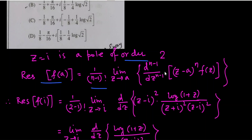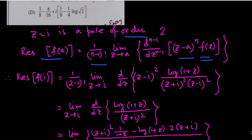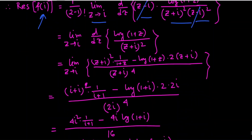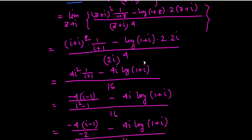The formula for the residue at a pole of order n at point a is: Res = (1/(n-1)!) · lim[z→a] d^(n-1)/dz^(n-1) [(z-a)^n · f(z)]. Since n = 2 and a = i, this becomes: lim[z→i] d/dz [(z-i)² · log(1+z) / (z+i)²(z-i)²] = lim[z→i] d/dz [log(1+z) / (z+i)²]. Taking the derivative gives [1/(1+z) · (z+i)² - log(1+z) · 2(z+i)] / (z+i)⁴, and substituting z = i.